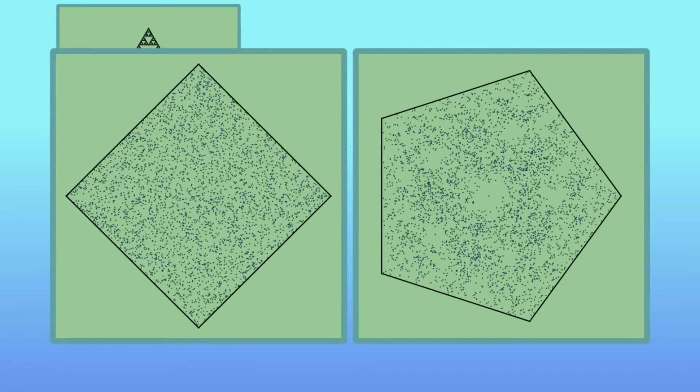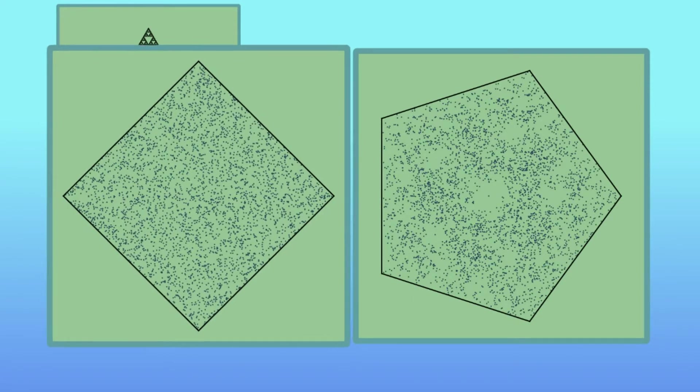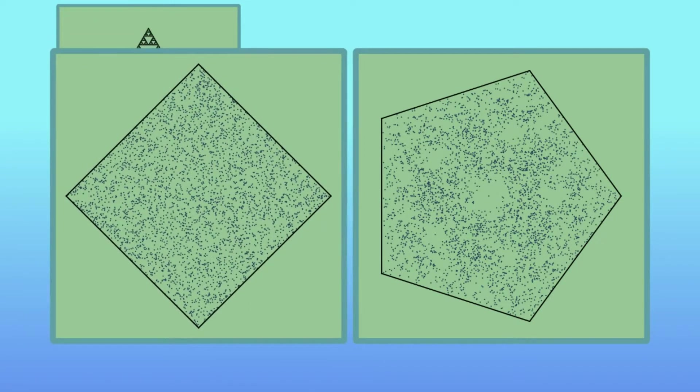In the square, it seems that we got sort of a uniform distribution of points without smaller squares. While in the pentagon, the image is much more interesting. The distribution changes from one place to the other. There are places totally empty of points, while others become more and more dense. And in any way, it is hard to recognize smaller and smaller pentagons as we had with the triangle.